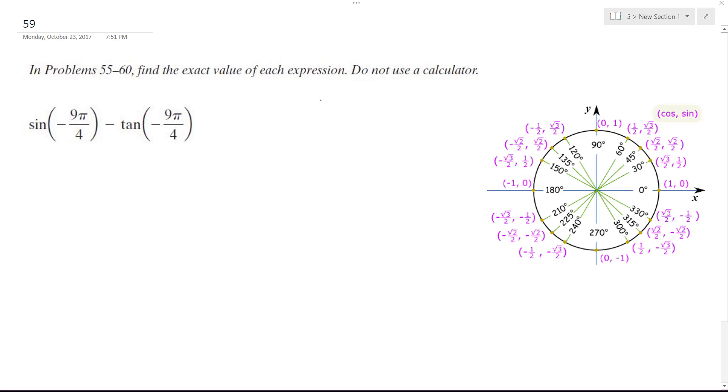Once around the circle is 2π, which can be converted to 8π over 4. The reason I did this is so I can add or subtract it from here. So if I add 8π over 4, that's the same thing as negative π over 4.